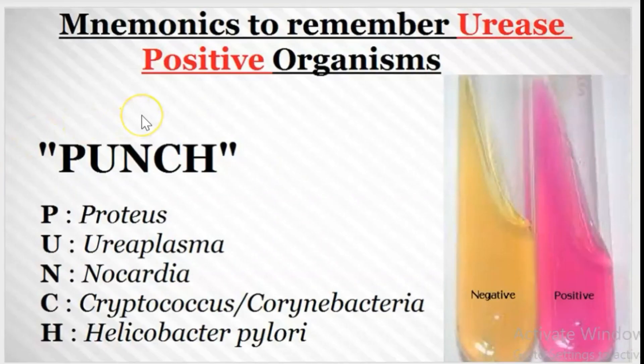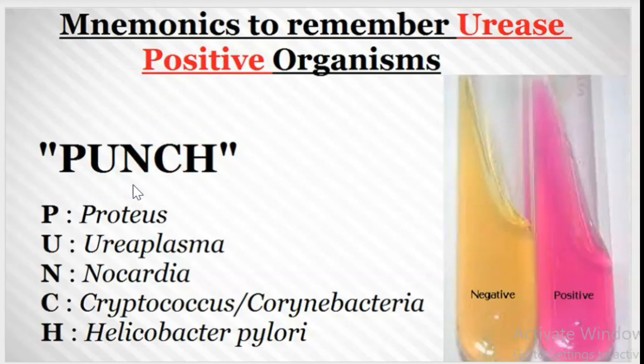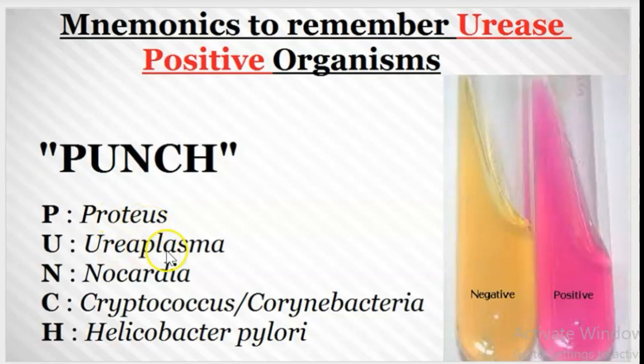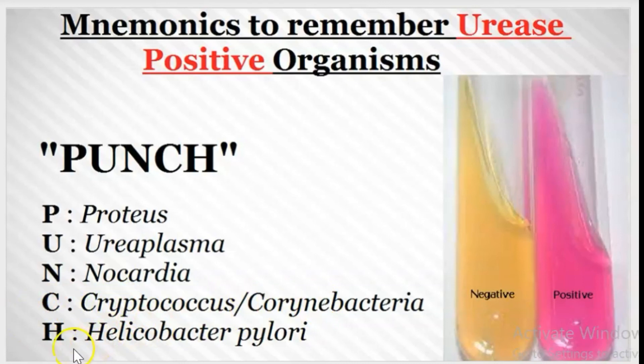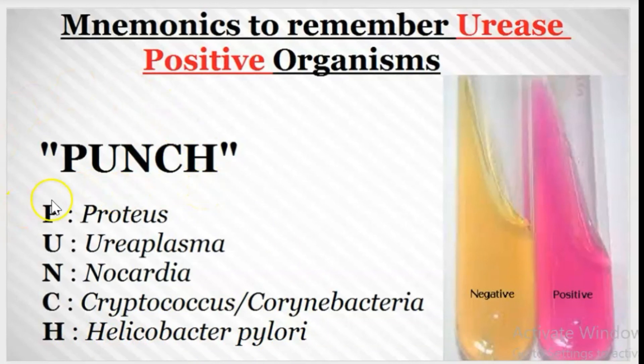Here is the mnemonic to remember urease positive organisms. The mnemonic is PUNCH. From PUNCH you can remember five organisms: P for Proteus, U for Ureaplasma, N for Nocardia, C for Cryptococcus and Corynebacterium, H for Helicobacter pylori. If you remember the word PUNCH, you can write these five or six organisms in the exam.